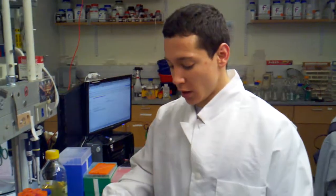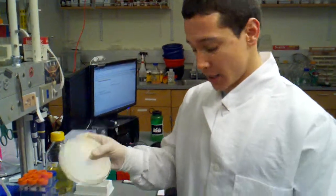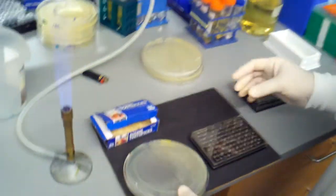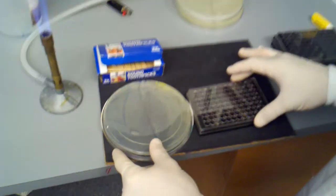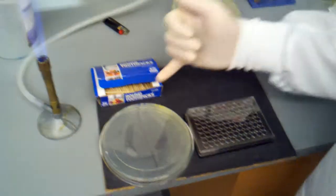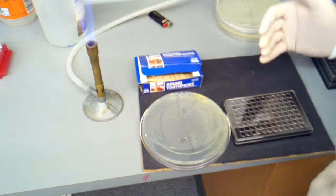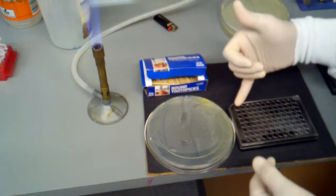Now we're going to be picking our colonies from our plate into our 96-well deepwell plate here, and we're going to be using sterile technique. I'm going to show you how to do it in such a way so that you remember where you've gone and that you don't pick into the same well twice or pick the same colony twice.